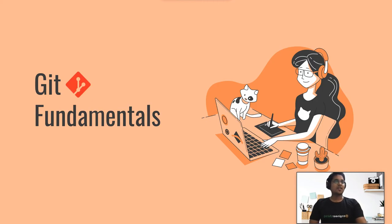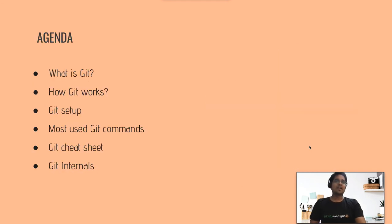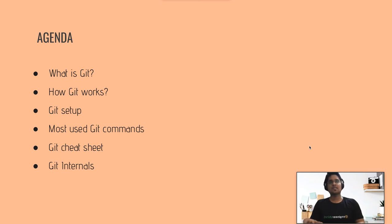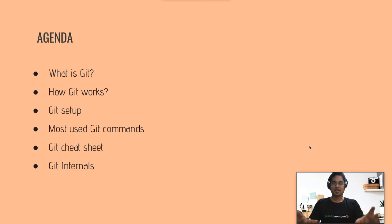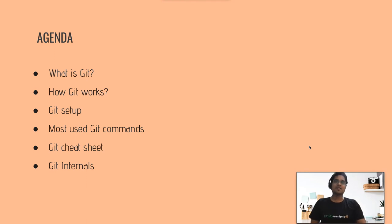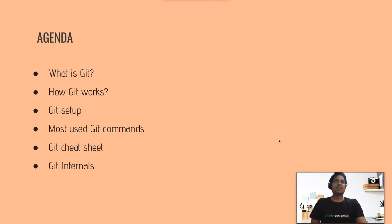In the Git fundamentals section, we'll be talking about what is Git, how Git works, how to set up Git in different operating systems, and the most used fundamental Git commands. Then we'll cover what is the cheat sheet — where you can find all Git commands in a single place — and then a bit about Git internals and how Git actually manages things.